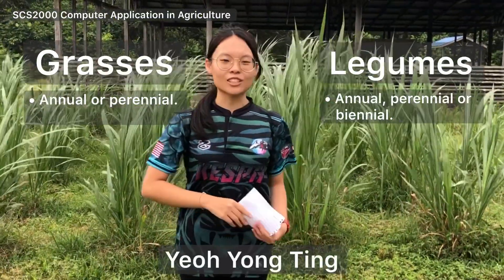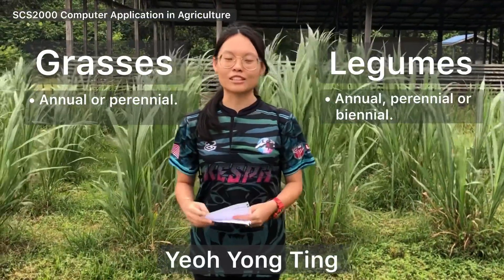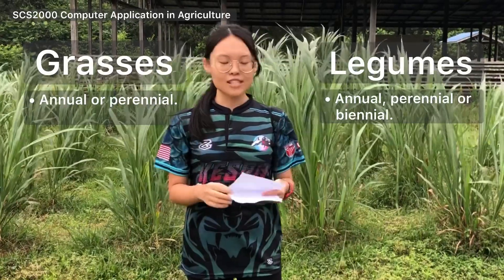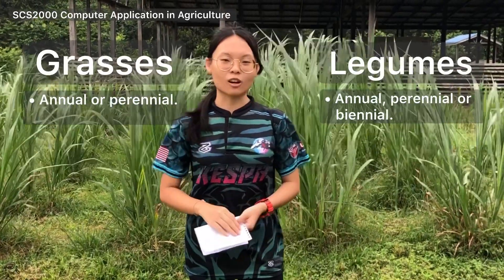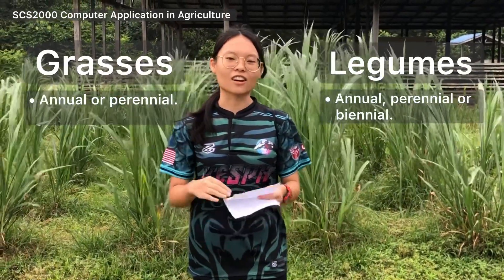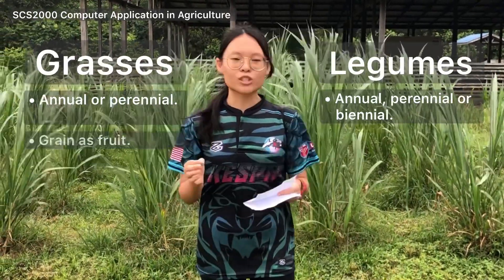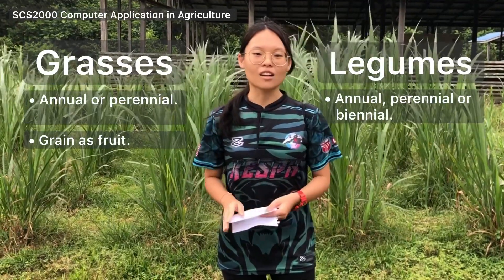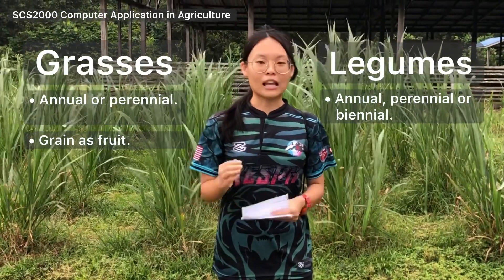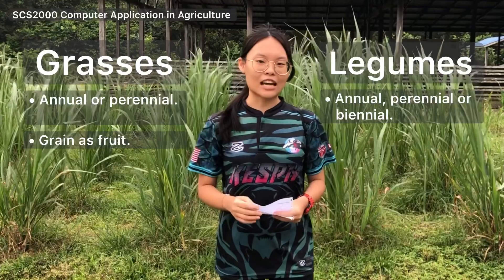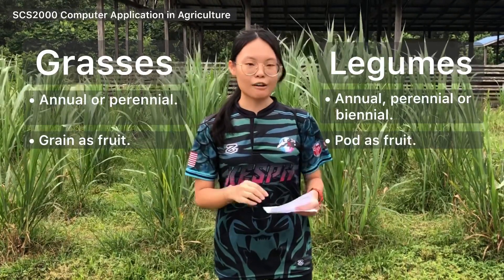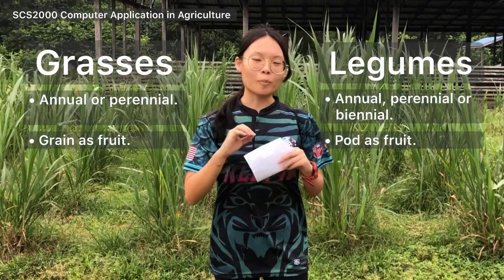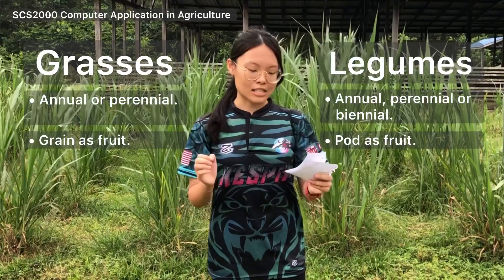I'm going to continue to talk about the differences between grasses and legumes. The fruits of grasses are called a grain, which is a small and hard seed with or without the hull. While the fruits of legumes are called a pod, which is a dry fruit that develops from a carpel and opens along the seam.